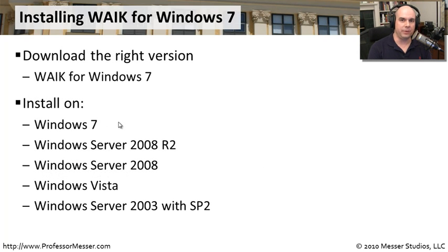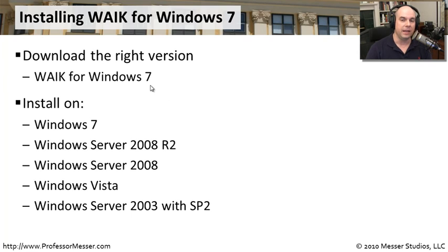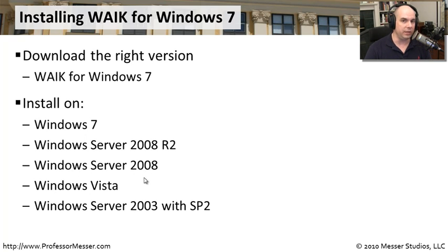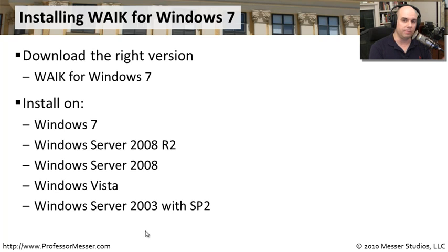The Windows AIK is absolutely free to download. Just go to Google or Microsoft's website and search for the WAIK for Windows 7. It's important to include 'for Windows 7' because there are other versions of the WAIK. The Windows AIK installs on Windows 7, Windows Server 2008 R2, Windows Server 2008, Windows Vista, and Windows Server 2003 with Service Pack 2. What you download is an ISO file, which you can then burn to a CD or DVD using a third-party program like ImgBurn, CD Burner XP, or InfraRecorder.